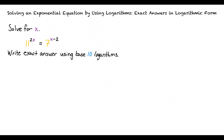Here, we have a problem asking us to solve for x in the exponential equation 11 to the 2x power equal to 7 to the x minus 2 power, and asked to write the answer using base 10 logarithms. It's important to note that the base 10 logarithm is just represented by a logarithm with no base written to it. I see that the x variable is in the exponent on both sides of the equation. How do I get x out of the exponent so that I can solve for it?